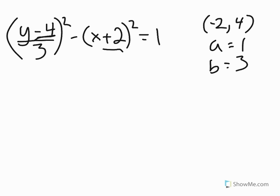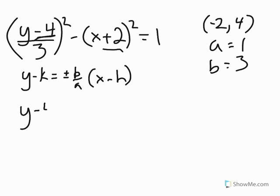So now that I know that, I can plug into the equation that we've just learned. So y minus k equals plus or minus b over a times x minus h. So I plug it in, y minus k, which is 4, equals plus or minus b, which is 3, divided by a, which is 1.